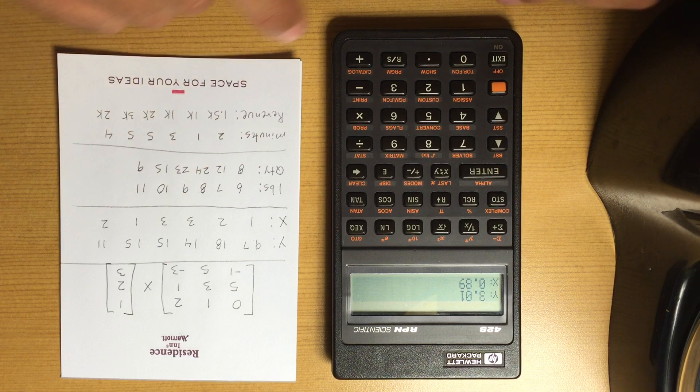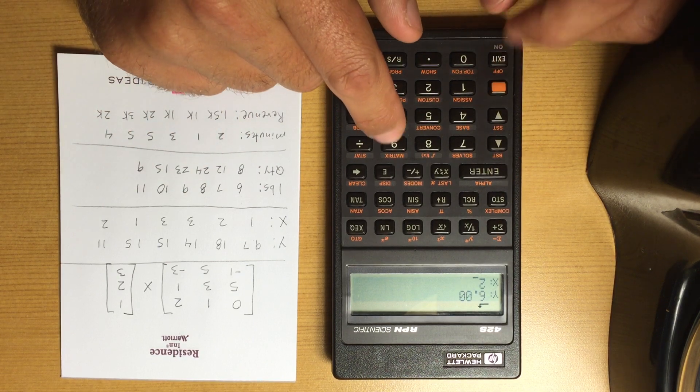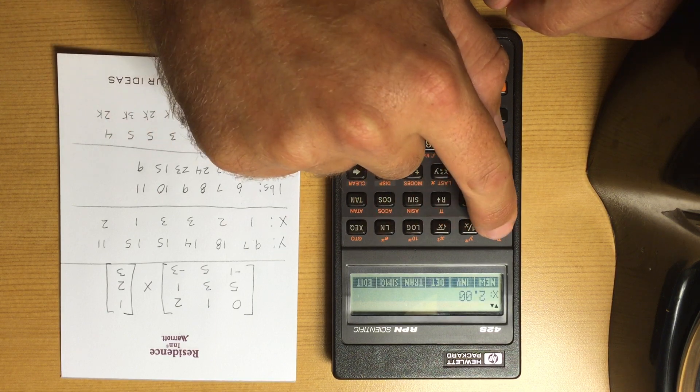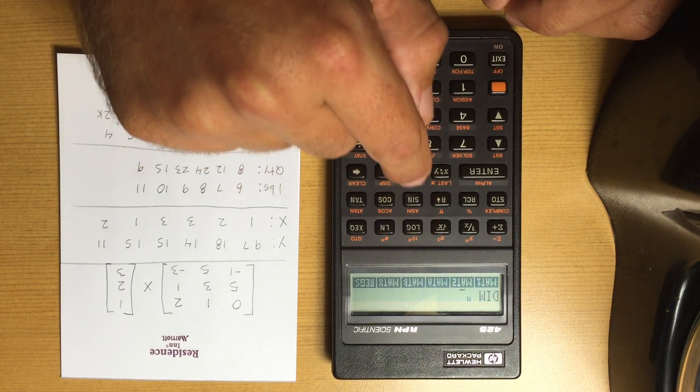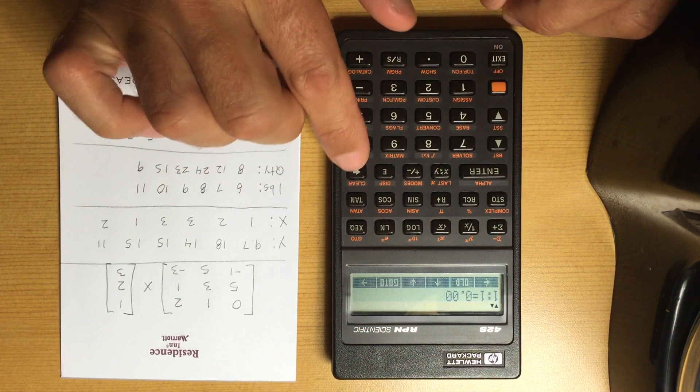I've got six elements, so a 6 by 2 matrix. I'm going to dimension a new matrix. I'll just use matrix 1 here. If I edit matrix 1...